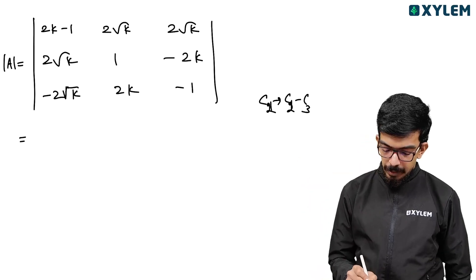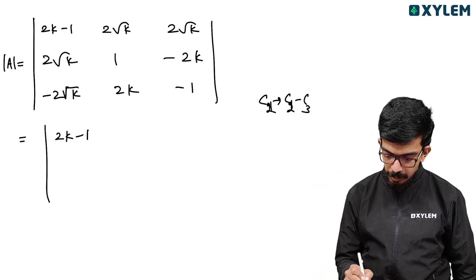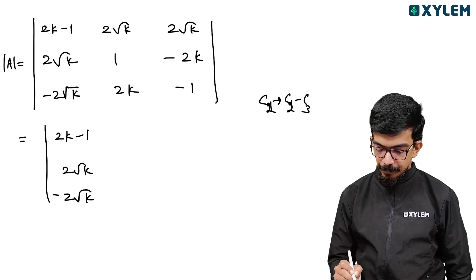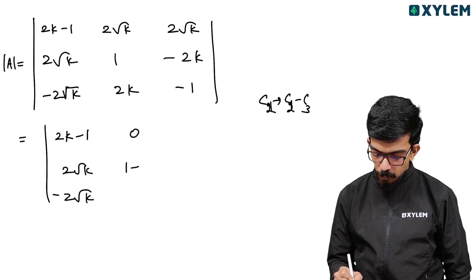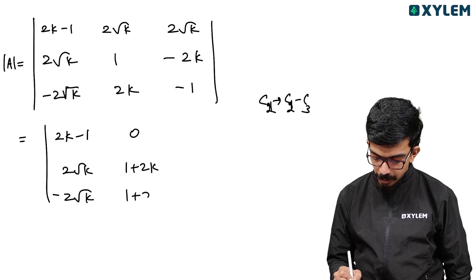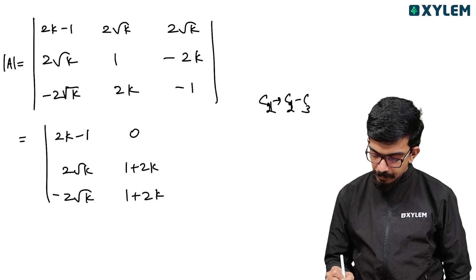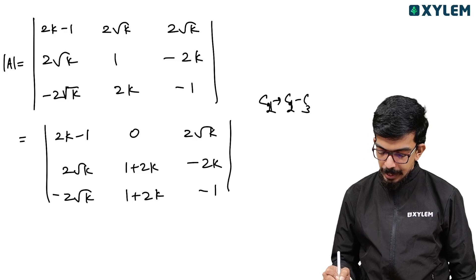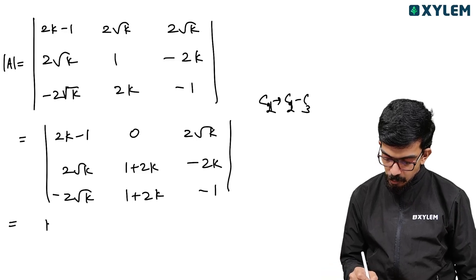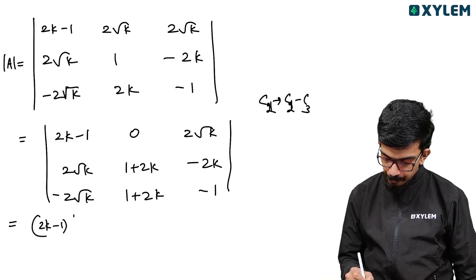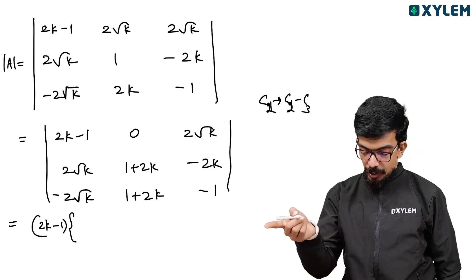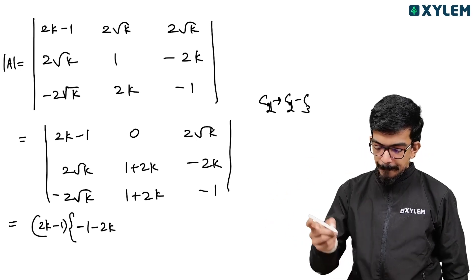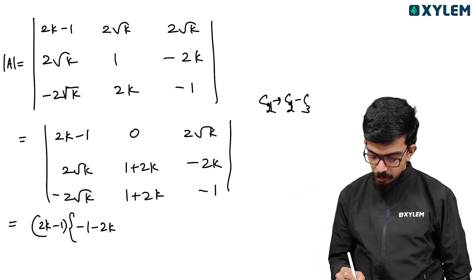After subtracting, we get: first column has 2k minus 1; second column entries become 2 root k minus 2 root k equals 0; and 1 plus 2k appears. Then 2 root k minus 2k minus 1 in another entry. Expanding: 2k minus 1 into 1 plus 2k into minus 1, then minus 1 minus 2k, plus 2k into 1 plus 2k, giving 2k plus 4k squared.